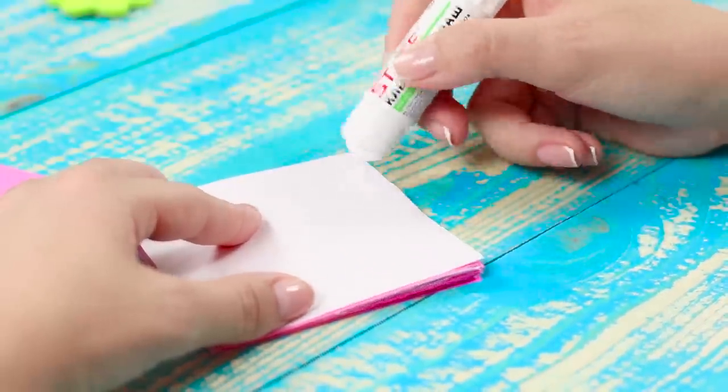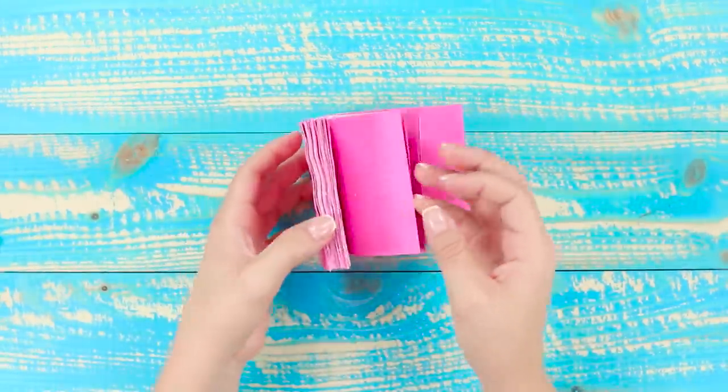Alternating sides of glue strips, glue together the two piles of paper. It turned out a long two-tone accordion.